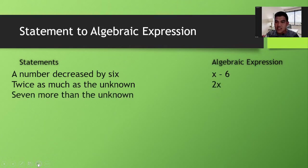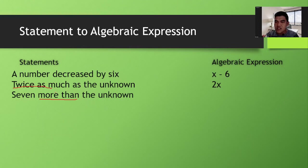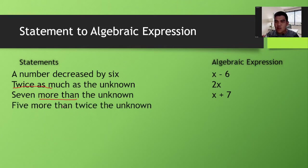'Twice as much as the unknown' — if our unknown is x, twice of it becomes 2x. 'Seven more than the unknown' — if our unknown is x, you add seven to it because of the words 'more than,' giving x plus 7. 'Five more than twice the unknown' — you first double the unknown to get 2x, then add five, giving 2x plus 5.